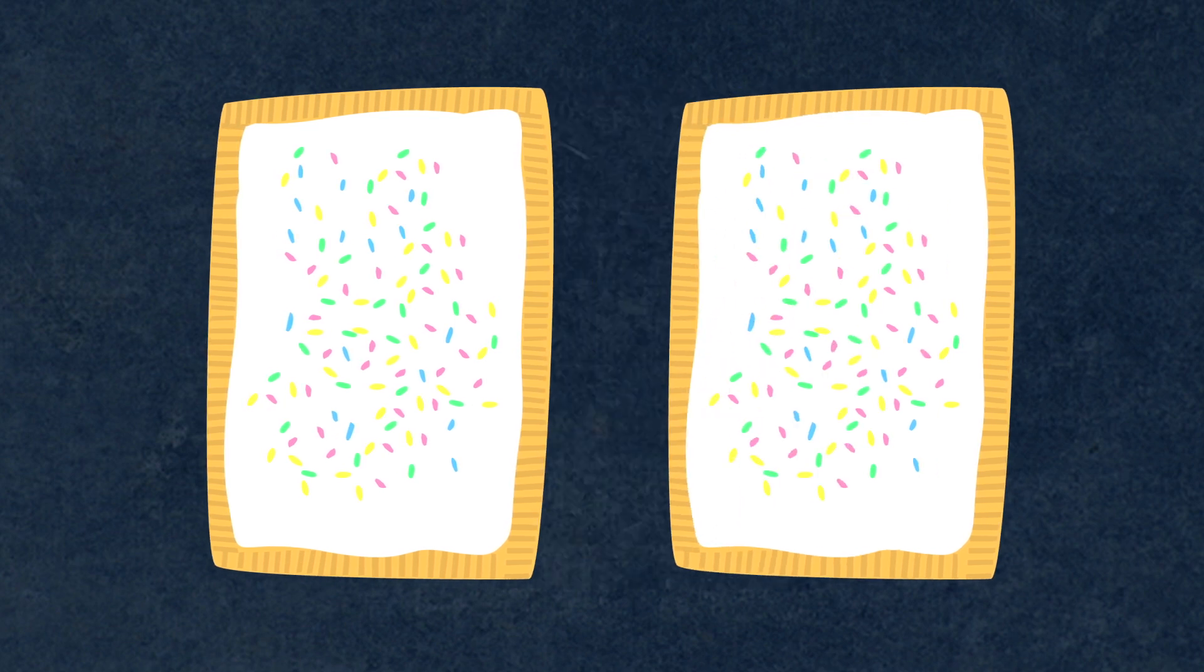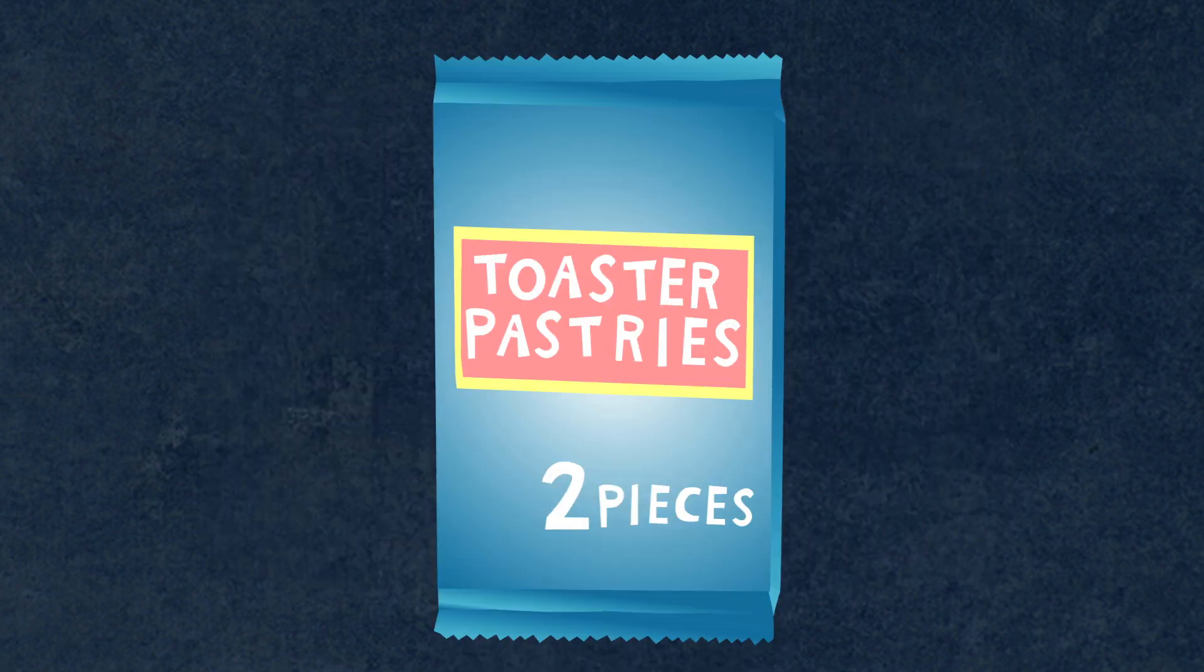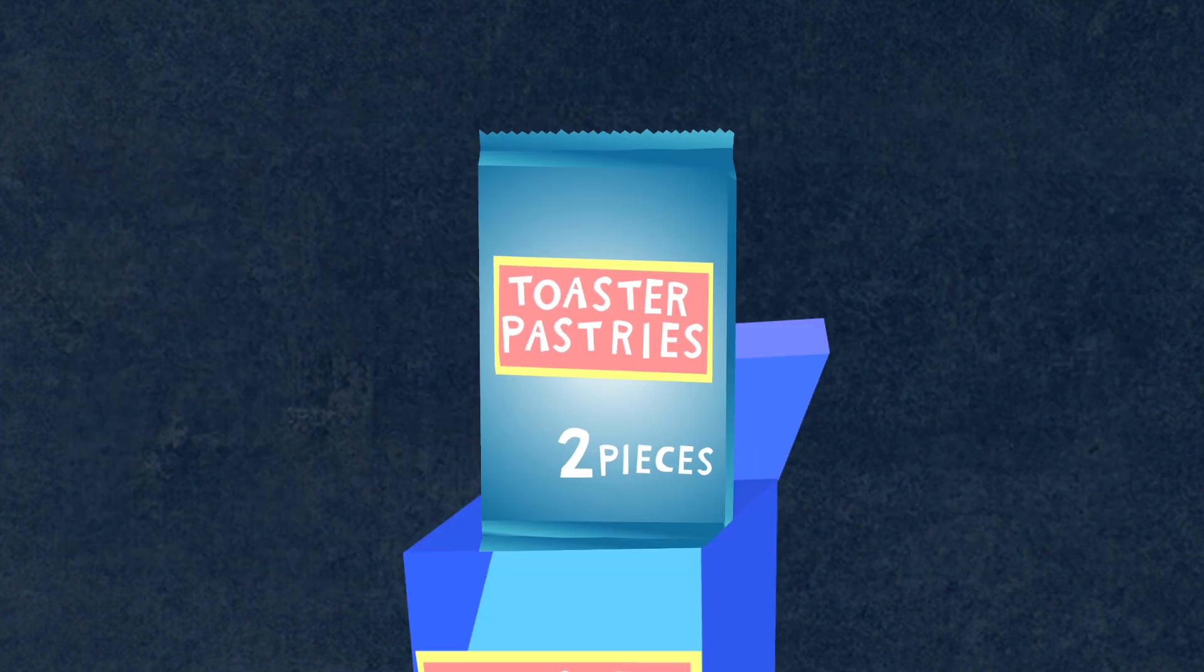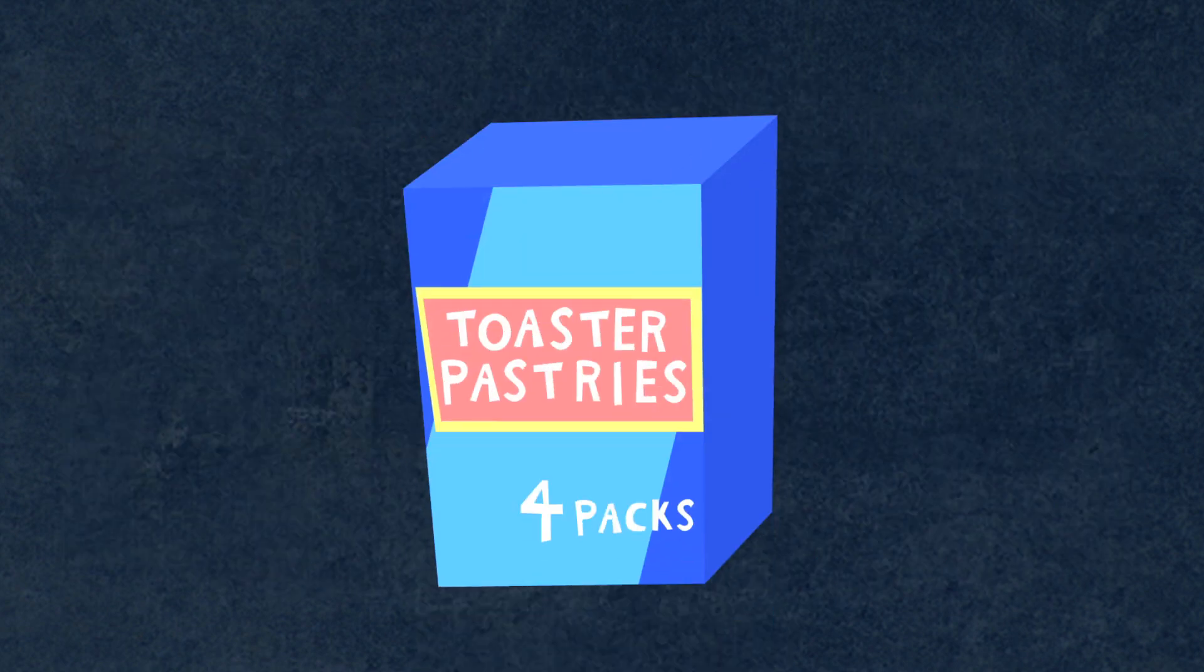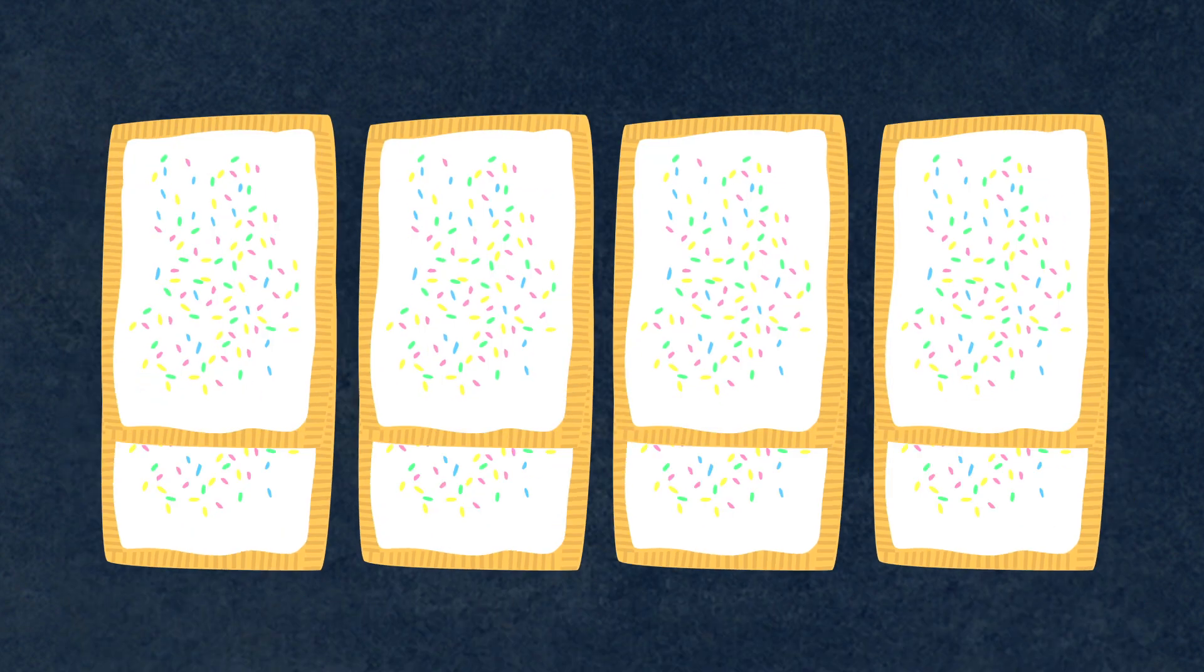Think about toaster pastries. They come in packs of two, and then those packs get put together in sets of four to make a box. So when I buy one box of toaster pastries, am I buying one thing, four things, or eight things?